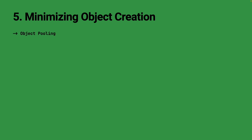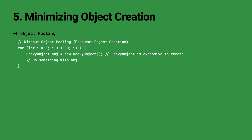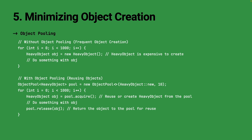Object pooling is a technique used to reuse objects rather than creating new ones each time they are needed. Instead of letting objects go out of scope and be garbage collected, they are returned to a pool and can be later fetched and reused. Object pooling is particularly beneficial when dealing with objects that are expensive to create, such as thread instances, database connections, or heavy computational objects. Using an object pool that manages instances reduces creation overhead — you acquire objects from the pool and release them back after use, improving performance.